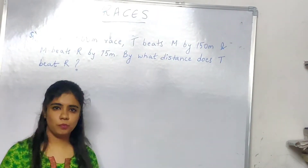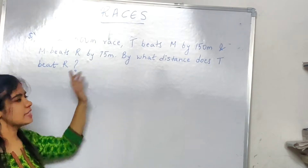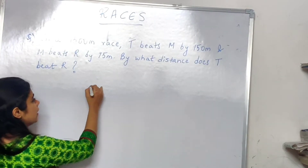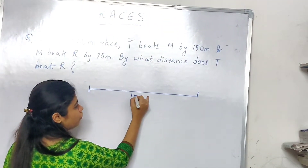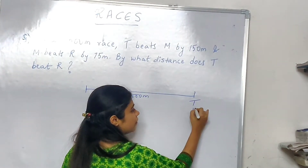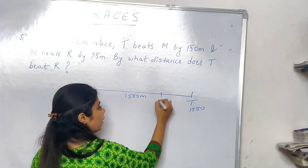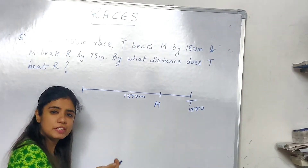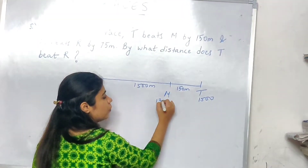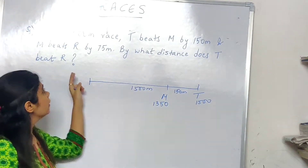Now let's look at the next question. In a 1500 meter race, T beats M by 150 meters and M beats R by 75 meters. By what distance does T beat R? You have a track of 1500 meters. T beats M by 150 meters — so when T reached 1500, M was at 1350 meters.